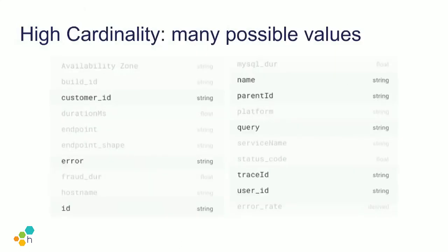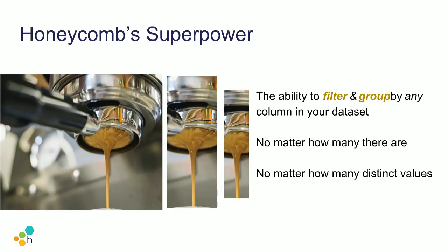We also talk a lot about high cardinality, because not only are there a lot of columns, but they can have a lot of possible values. For example, looking at the data set we're going to examine, we care about customer ID — each distinct entry might have a different thing from a different customer. We care about things like what query was called on a SQL call and what error came out of it. Honeycomb's superpower is the ability to filter and group by any column in your data set, no matter how many columns there are or how many distinct values.